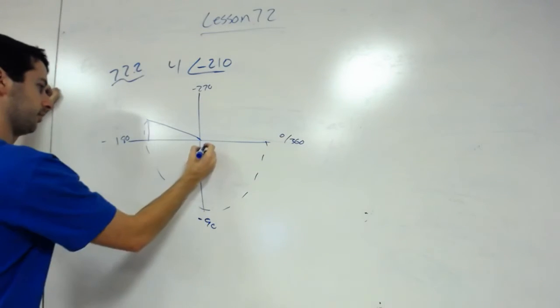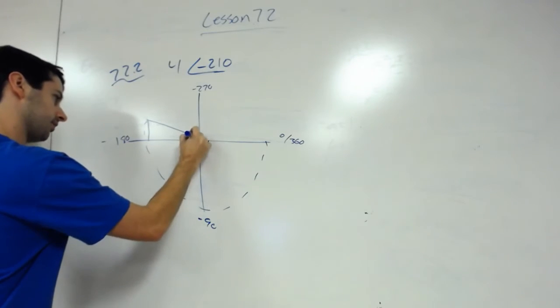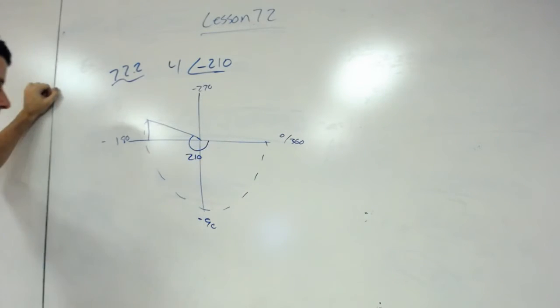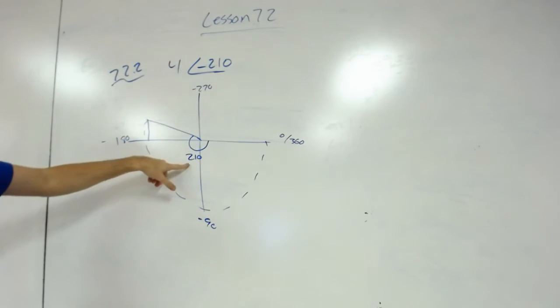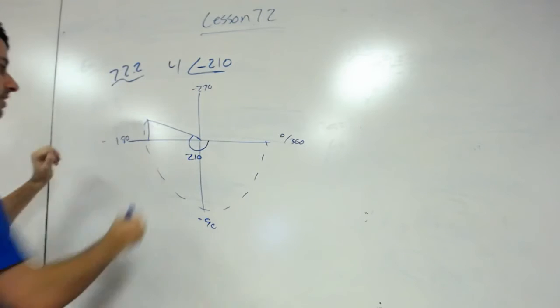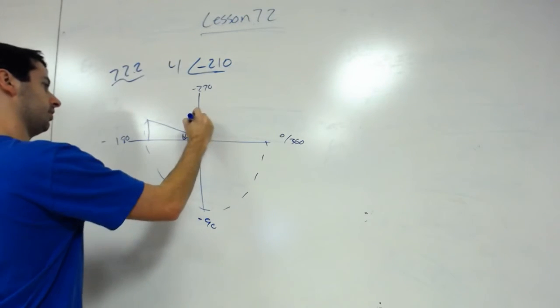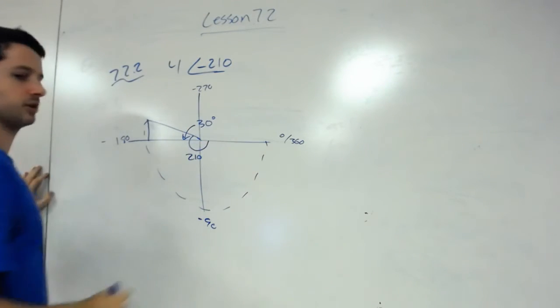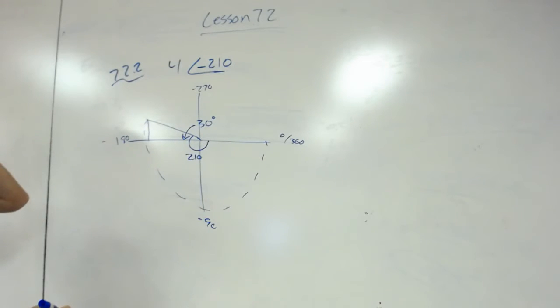If this degree is 210, well we always subtract from the x-axis. So we subtract 210 minus 180, take the absolute value of it, making this angle 30 degrees and obviously this is 90, making that 60.